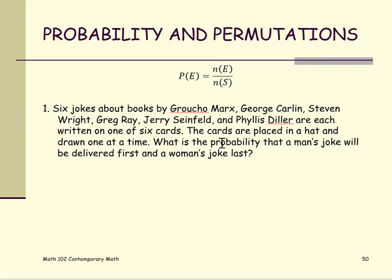This problem we can use the permutation formula, the n permutation r, or the n items relating r by one at a time. We have six jokes: five men's jokes plus one woman.